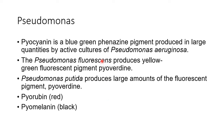A tricky point about Pseudomonas is that in case of isolation you can use pigment production as a trick to identify whether you have Pseudomonas growing on your plate or not. Pyocyanine, pyoverdine, pyorubin and pyomelanin are the pigments commonly produced by different species of Pseudomonas. Pyocyanine is a bluish-green phenazine pigment produced in large quantities by active cultures of Pseudomonas aeruginosa. Pseudomonas fluorescens and Pseudomonas putida produce pyoverdine, a yellow-green fluorescent pigment.